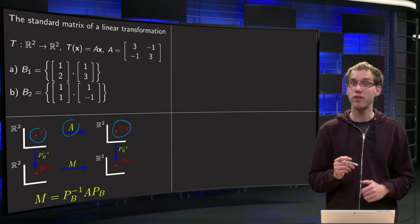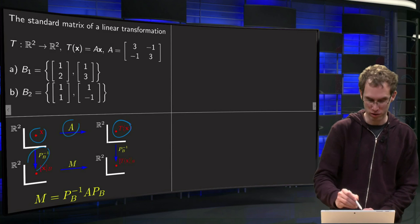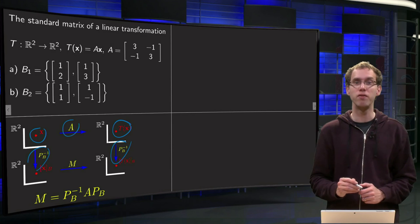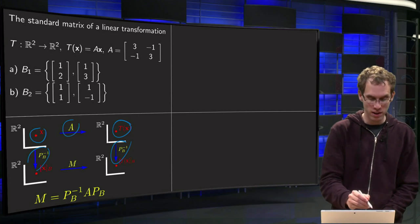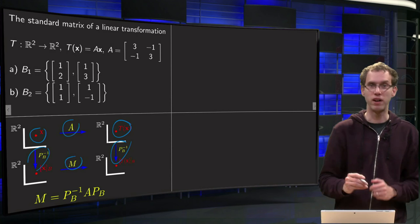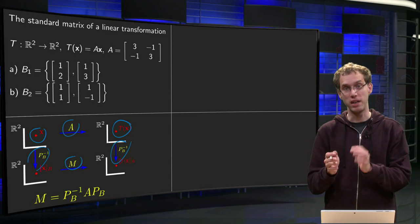Then we can find coordinate vectors using our matrix PB. So we can go down with PB inverse over here and with PB over there to go to x in the basis of B and T(x) in the basis of B. And we can combine those to find the matrix M. And remember that M equals PB inverse times A times PB.